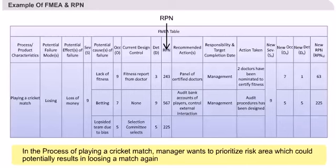For each of the identified items, the team management worked on recommended actions and implemented them. They then recalculated the new RPN.